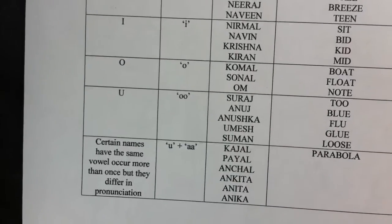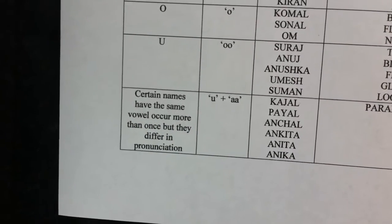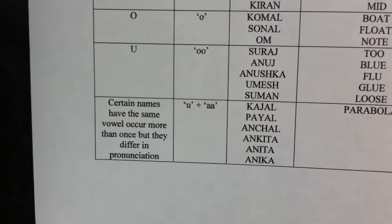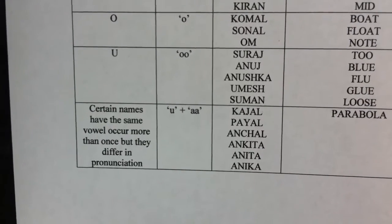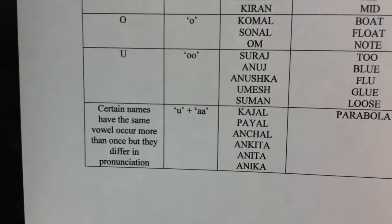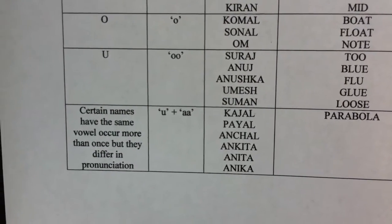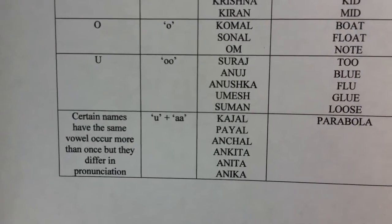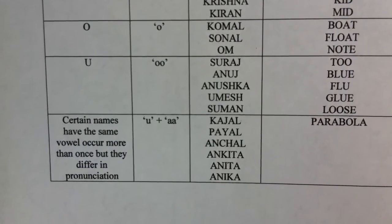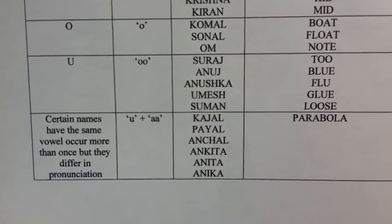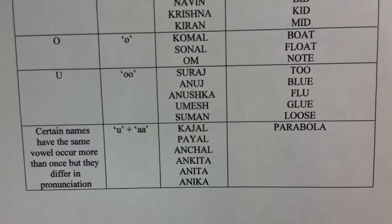There are certain names which happen to be exceptions, where the same vowel occurs more than once but differs in pronunciation. Like in the name Kajal, the first A is pronounced as the 'uh' sound whereas the second A is pronounced as the 'ah' sound, or vice versa. Other examples would be Payal, Ankita, Anita, Anika, etc. A word from the English dictionary where the pronunciation changes for a vowel in the same word would be Parabola.